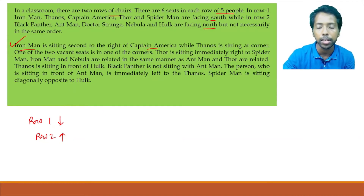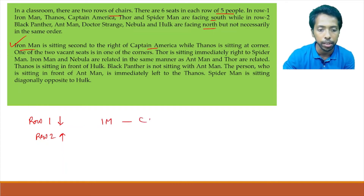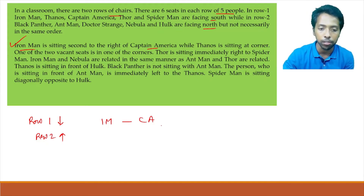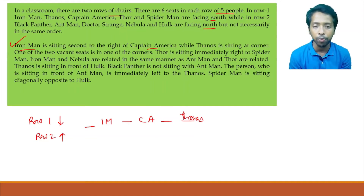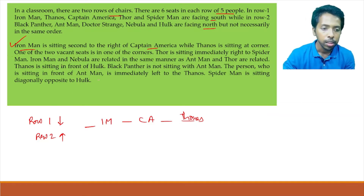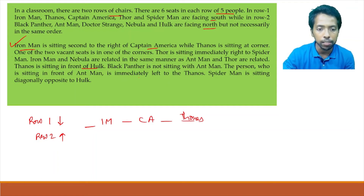Iron Man is sitting immediately to the right of Captain America — both are in the first row. Iron Man is also second to the right of Captain America. Keeping in mind there are six seats, Thanos is sitting in one of the corners. We need to find out whether Thanos is at the extreme right or extreme left. Thanos sits in front of Hawk, and the immediate left of Thanos must be someone — so Thanos cannot be at the extreme right, only at the extreme left.